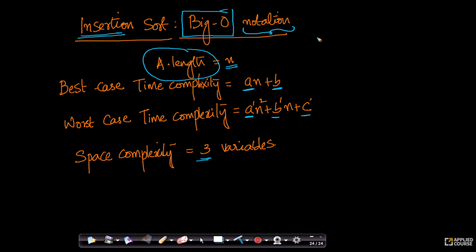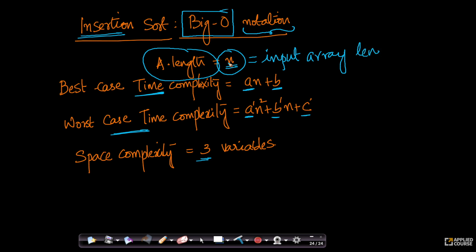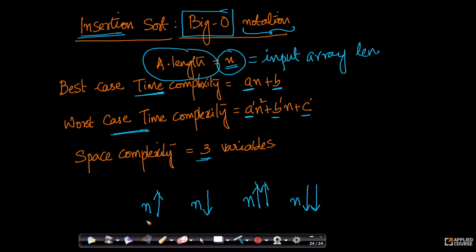Our insertion sort algorithm's time complexity would change — both the best case and worst case — as the length of the input array changes. As n increases, I'll use an up arrow to represent that. If n increases a lot, I'll put two arrows. Similarly, a down arrow means n is decreasing, and two down arrows means n is decreasing a lot. This is a simpler notation I'll use going forward.